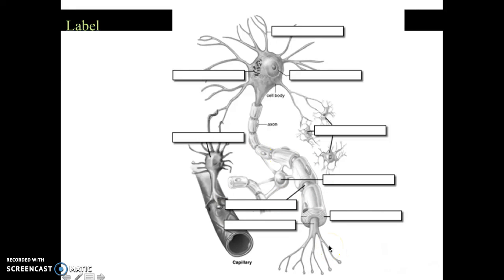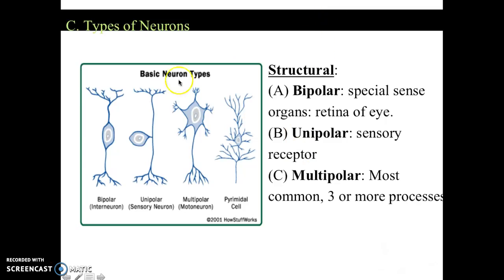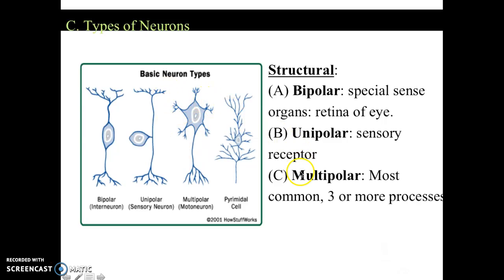You're going to do the questions on the Edpuzzle to help label the structures. The last thing is the types of neurons: bipolar, unipolar, and multipolar. Your bipolar is a specialized cell found in the retina of the eye, with the soma in the center. Your unipolar is sensory receptors, also with the soma in the center but with the axon extending outward. The multipolar is the most common — with dendrites on one side, three or more processes — and is part of the motor neuron.